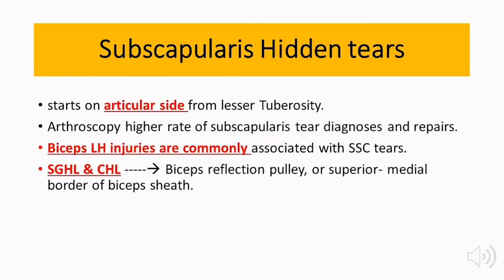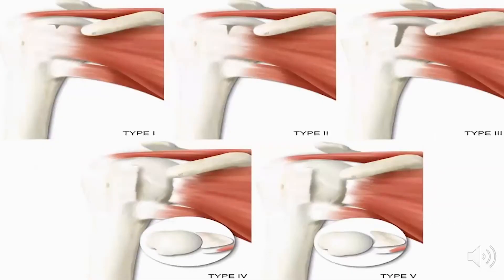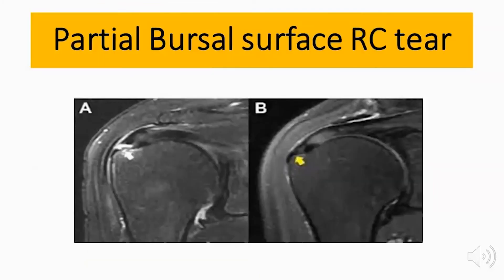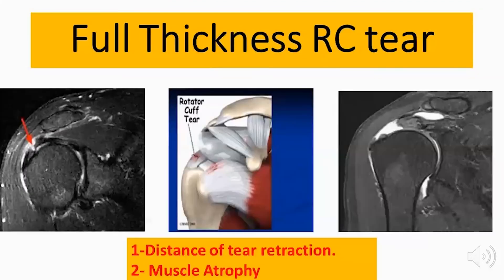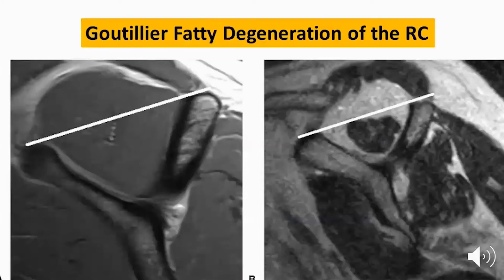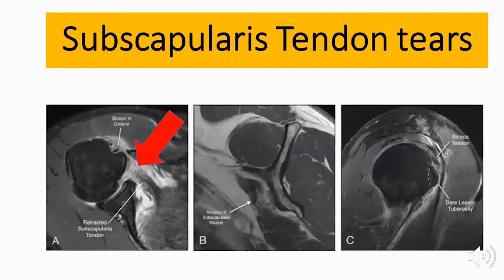Subscapularis tears are hidden tears that usually start on the articular side of the lesser tuberosity. Diagnosis is mainly confirmed by arthroscopy, and they are usually accompanied by biceps long head injuries, with complete tear and complete fatty degeneration. MRI shows partial bursal surface tears and full thickness rotator cuff tears. The Goutallier classification illustrates fatty degeneration of the rotator cuff, with complete degeneration visible on the right side, including subscapularis tendon tears.